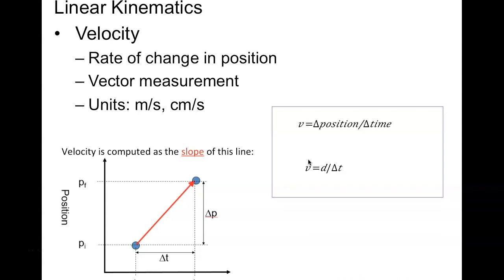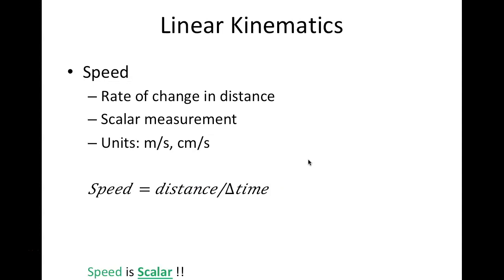Similar to velocity is speed, which is our scalar quantity for rate of change — specifically the rate of change in distance. Distance is scalar, and so is speed. Velocity and displacement are our vectors. The units are the same — meters per second or centimeters per second — but instead of using displacement, speed uses distance, which makes it scalar.